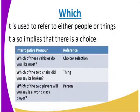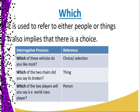'Which' is used to refer to either people or things, and it also implies that there is a choice. For example: Which of these vehicles do you like most? It gives you a choice or a selection. Which of the two chairs did you say is broken? That refers to a thing. Which of the two players did you say is a world class player? That refers to a person.